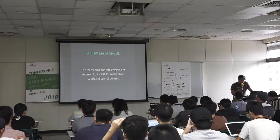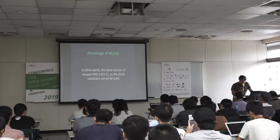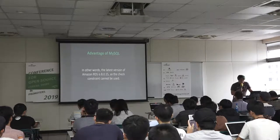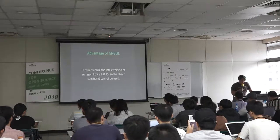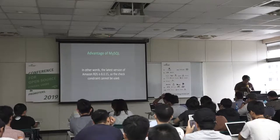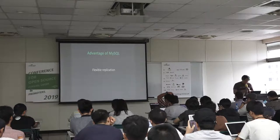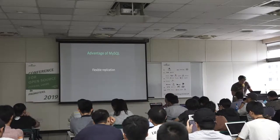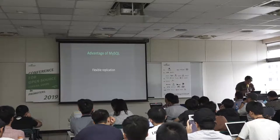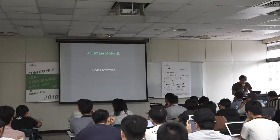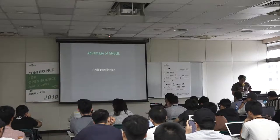In other words, the last version of Amazon RDS is 8.0.15, so the check constraint cannot be used there. Next, another future of MySQL is replication. MySQL supports much more flexible replication features than Postgres, and it is faster.